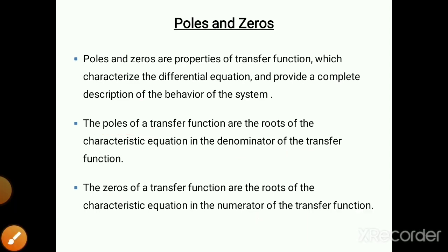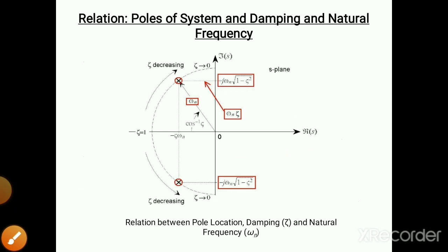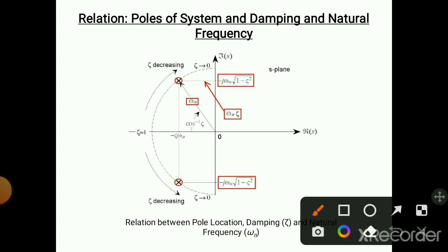Here the relationship is provided between the poles of the system, the damping coefficient, and natural frequency. The damping coefficient is denoted by zeta and natural frequency is denoted by omega_n.